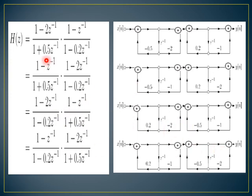There are four possible ways to draw the cascade or form H1(z) and H2(z) and accordingly draw the cascade structure.